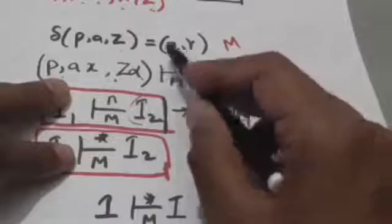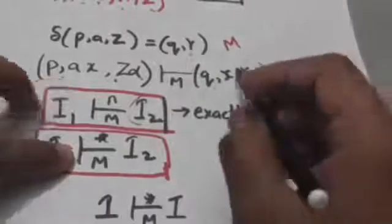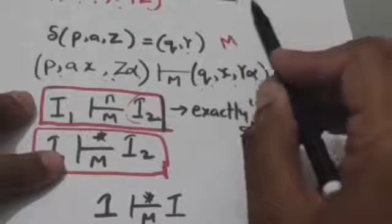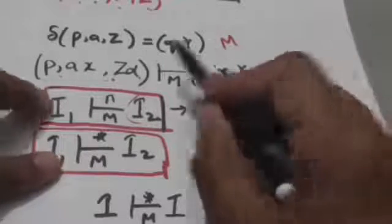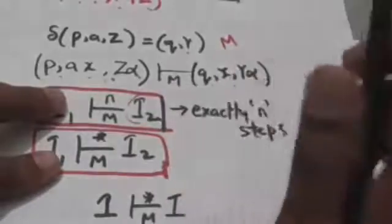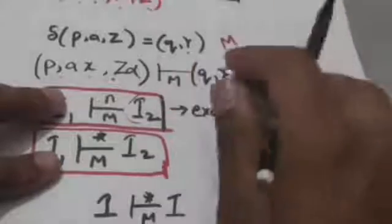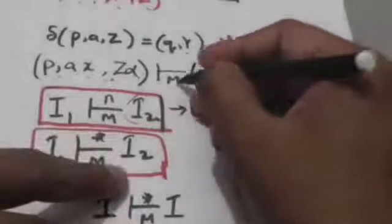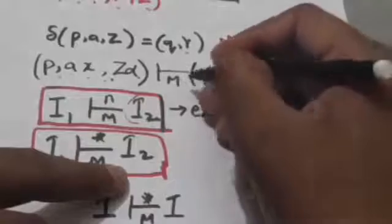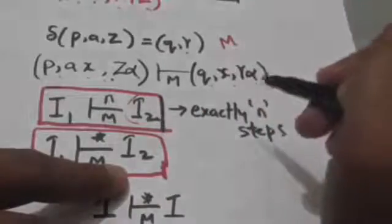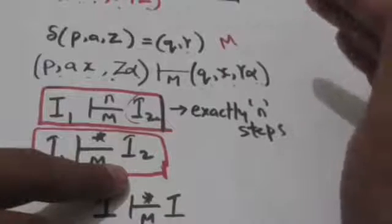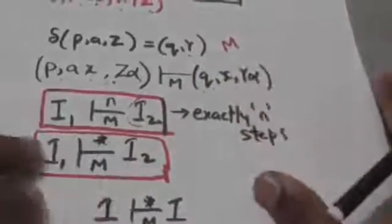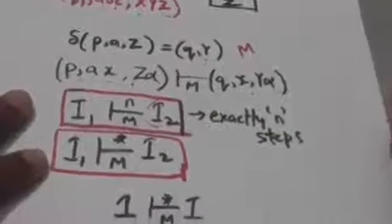These two instantaneous descriptions of the pushdown automata can be related by a symbol indicating one move, because the pushdown automata reaches this configuration from that configuration in exactly one move. Here M describes that we are talking about pushdown automata M. If it is obvious that we are talking about pushdown automata M, then this M can be removed.